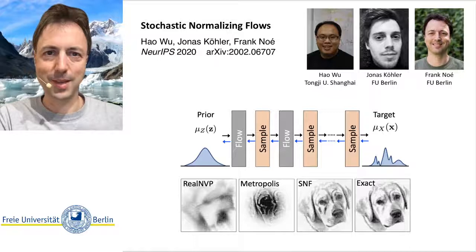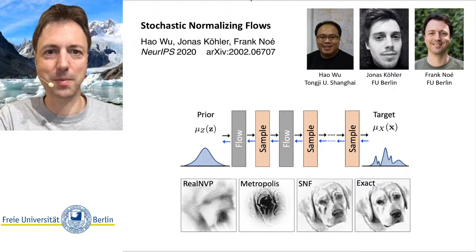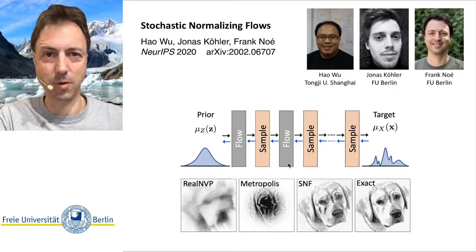Hello, my name is Frank Nui and I will introduce the Stochastic Normalizing Flows paper with Hao Wu and Jonas Köhler. Stochastic Normalizing Flows is a generalization of the normalizing flow framework, and here we also allow stochasticity in the flow — the inclusion of stochastic layers in the flow.